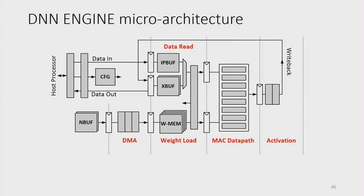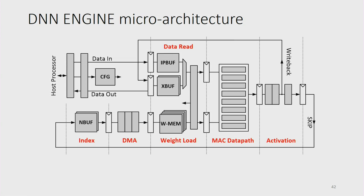In the microarchitecture, we make a few small modifications for sparsity. We add a comparator in the activation stage that takes finished accumulator values and compares them with a programmable threshold, generating a skip signal to predicate writes back to XBuf. We also add a small buffer called NBuf that stores a list of active nodes in the current layer, used to generate addresses for the now non-contiguous weights.